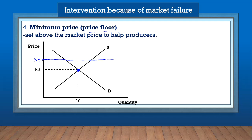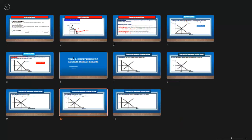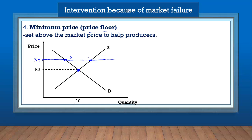At this minimum price, the supply curve and the demand curve are cut at different points: the minimum price cuts the supply curve at a higher quantity and the demand curve at a lower quantity. So what the minimum price has caused is a surplus — a surplus means there's more supply than there is demand, because of the minimum price.